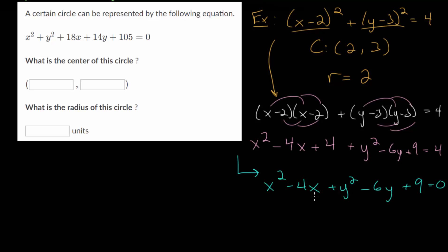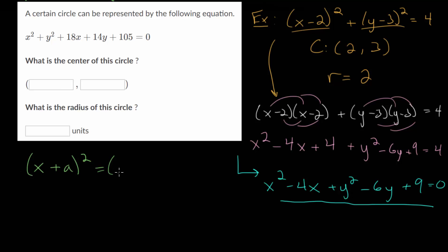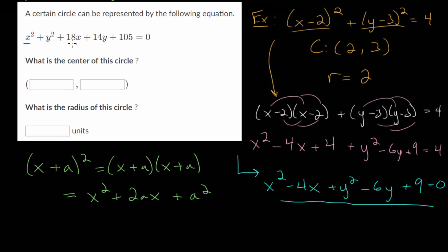In these example problems, we're going to start with the expanded equation and need to transform it back to the standard equation so we can figure out the center and the radius of the circle. To do that, we need to complete the square. Remember, the process of completing the square — we want to think about what a perfect square binomial looks like. Something like x plus a squared, if we multiply it out, gives us x squared plus 2ax plus a squared.